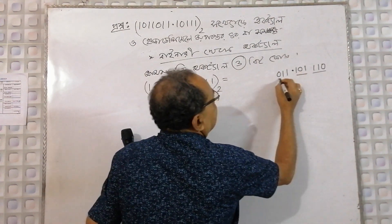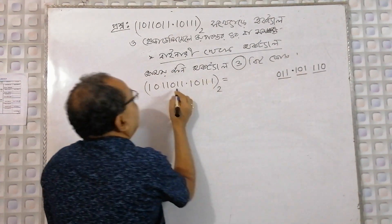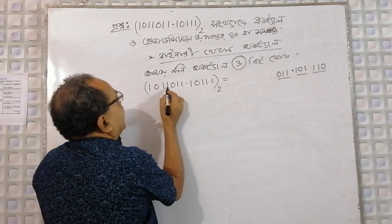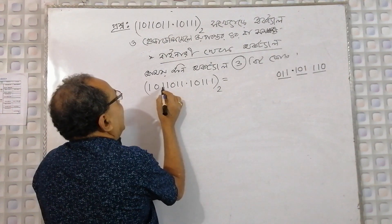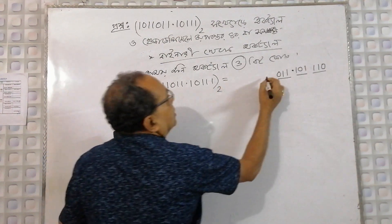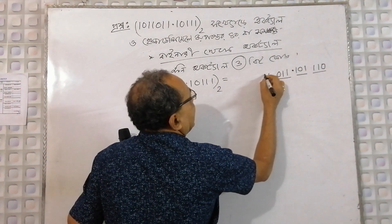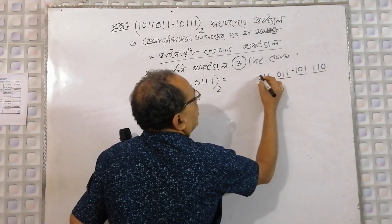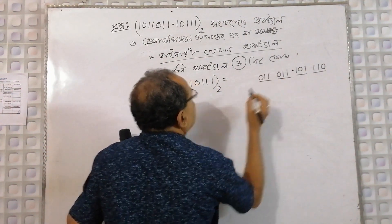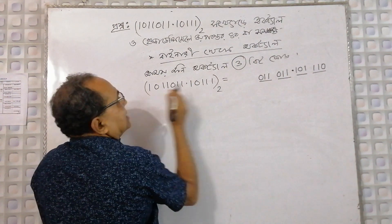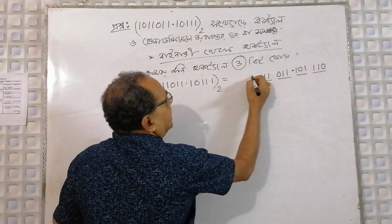8 bits. Now, 1, 1, 0. 1, 1, 0. So, 1. This is 1 bit. We have to do this.